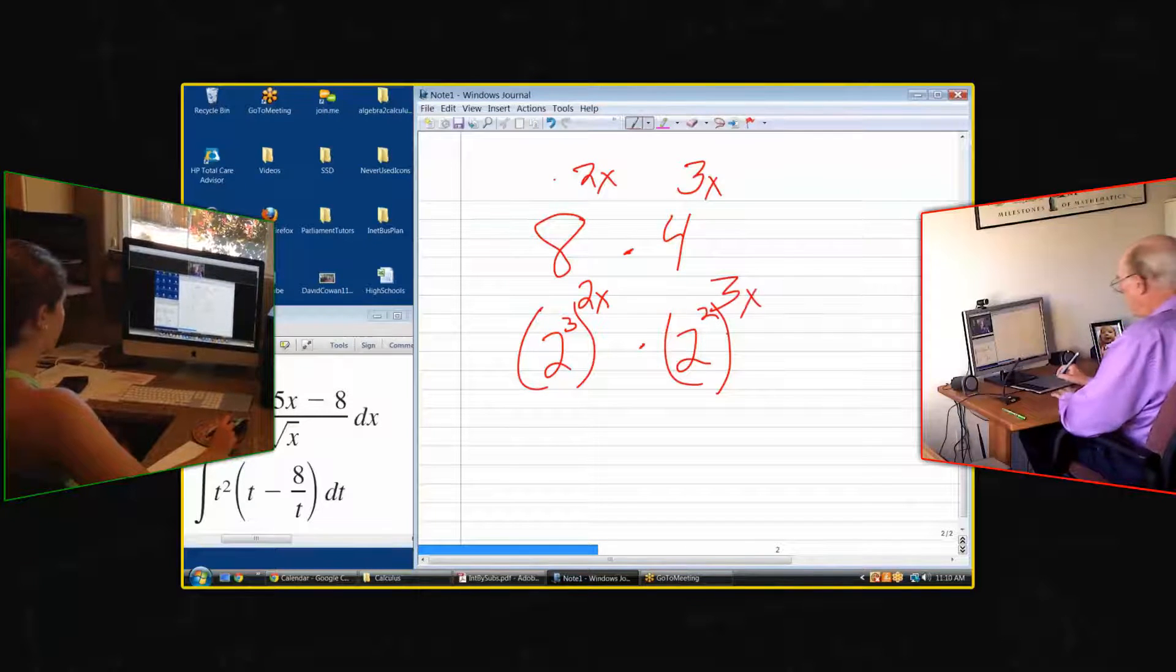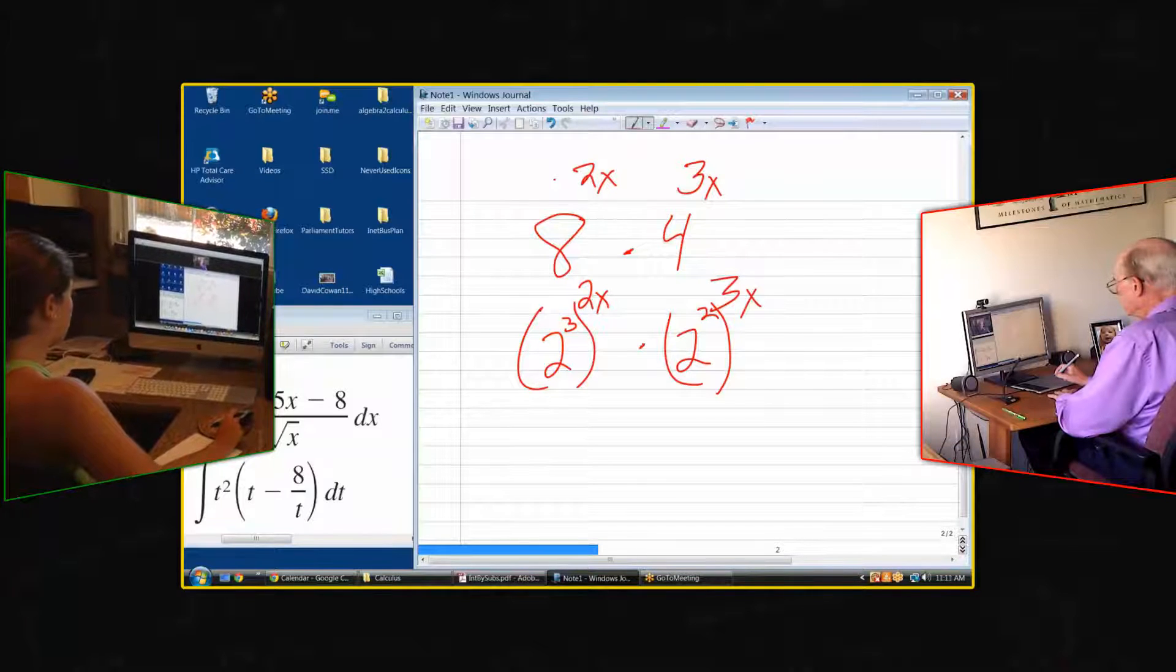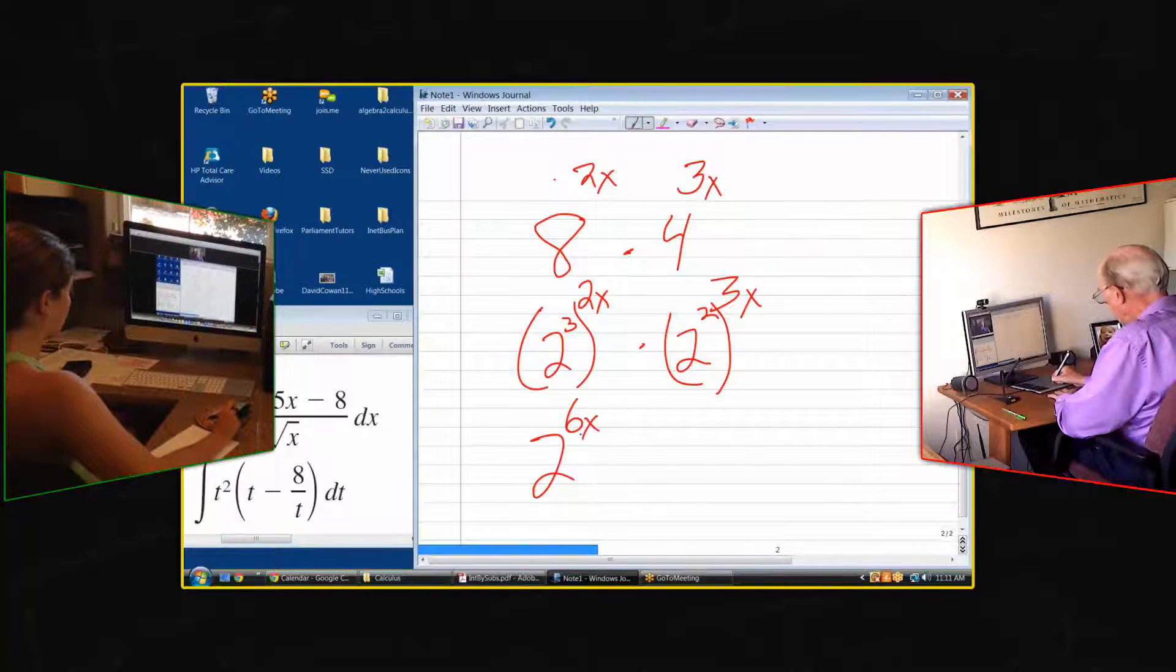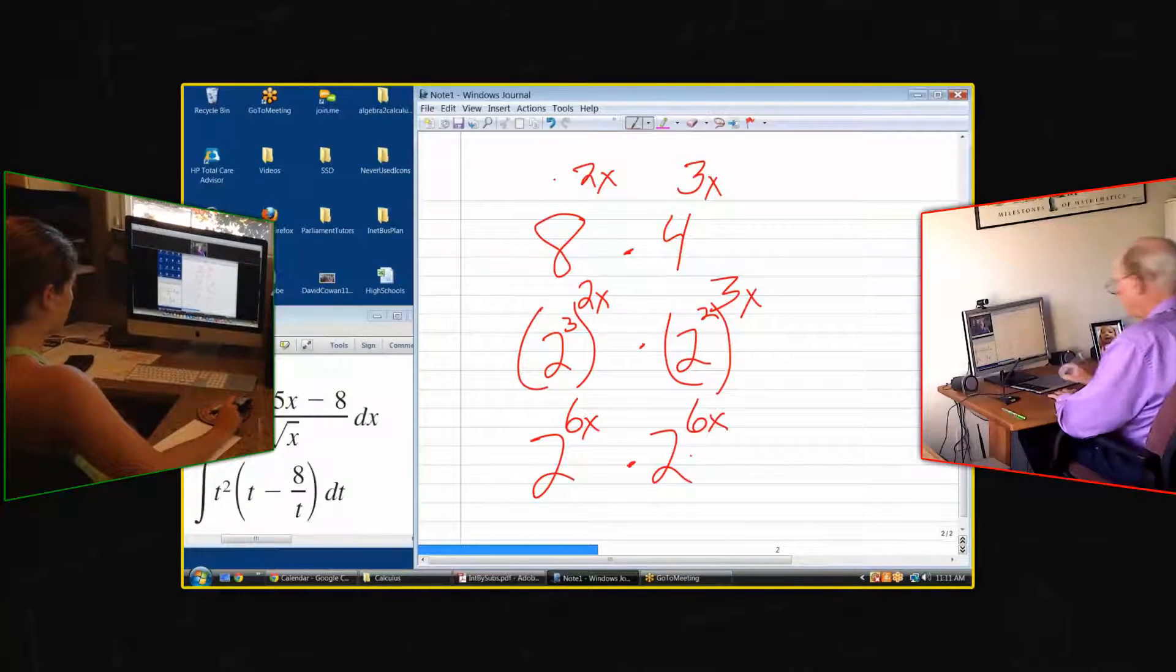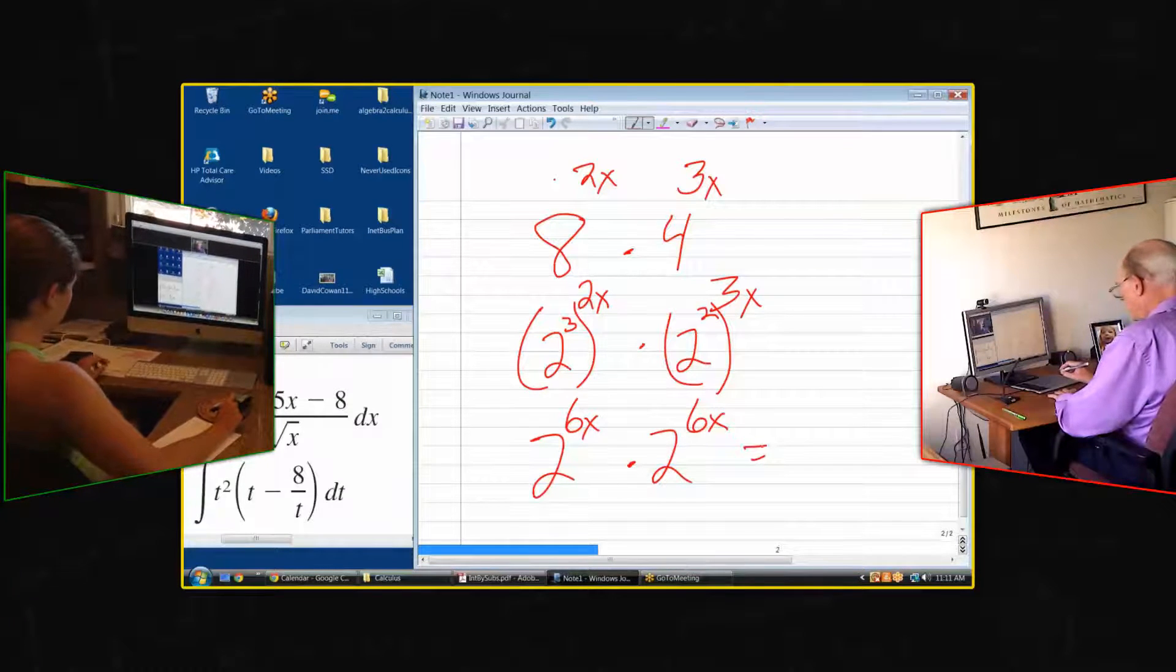Okay, and then what? And then we get 2 to the 6x in both cases, applying the rules of exponents. And then what's the final simplified expression?